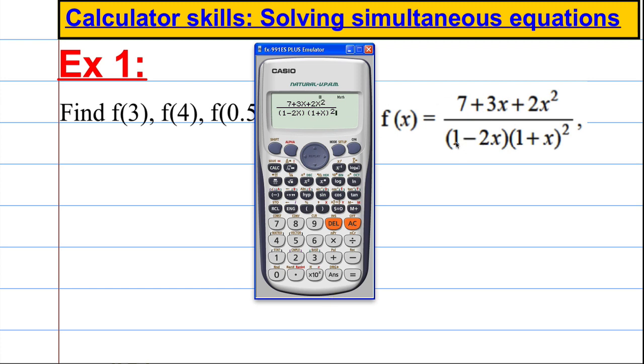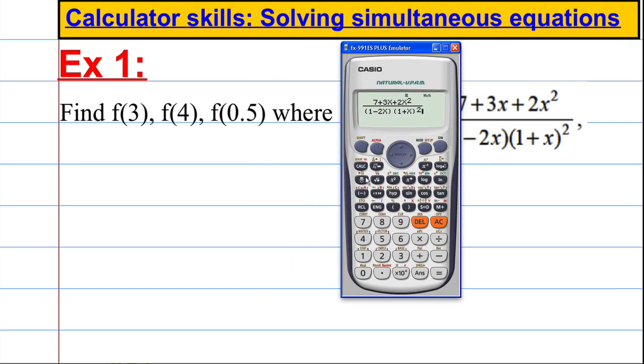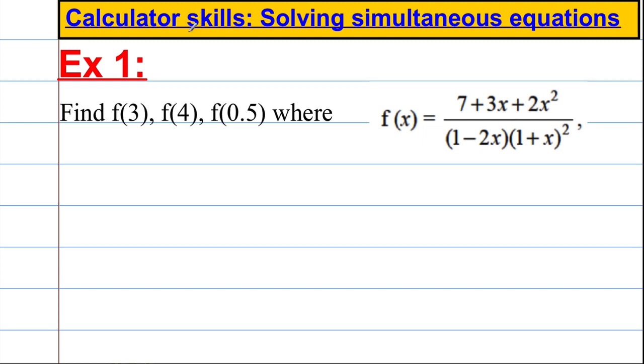Now just double-check you've got the exact right function and you've copied it correctly. All you have to do now with your calculator - look how good this is - press calculate. It asks you what X value you want. You want X=3, you put 3 in, and you get negative 17 over 40. So just like that, f(3) = -17/40.